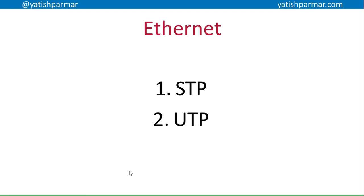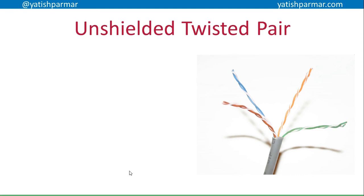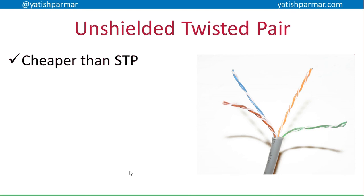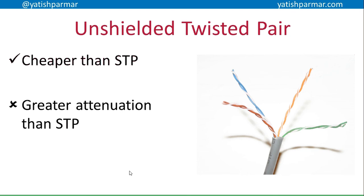Now, Ethernet — there are two types: STP and UTP. STP is shielded twisted pair, UTP is unshielded twisted pair. Unshielded twisted pair has different pairs of cables twisted together at different rates of twisting — some tightly, some loosely — making one set of twists through the middle of the cable. It's cheaper than STP. However, it has greater attenuation than STP. Attenuation is the degradation of the signal. Compared to coax, there's no shielding on UTP, so the signal will attenuate quicker due to electromagnetic interference.